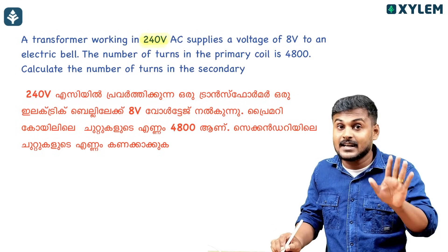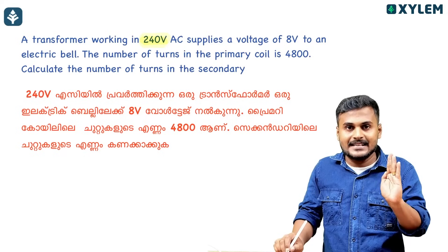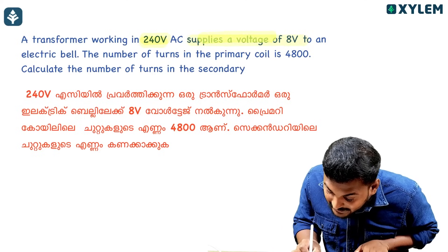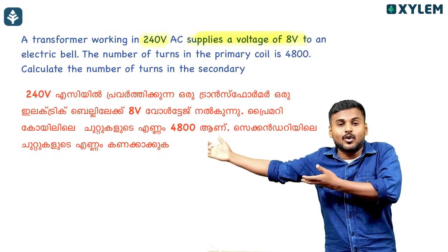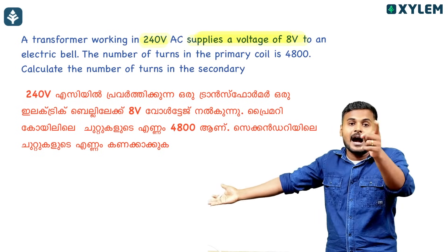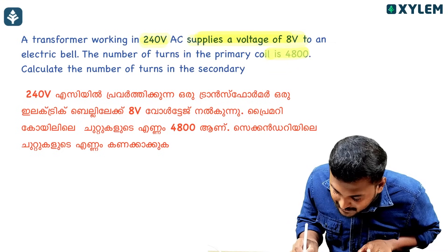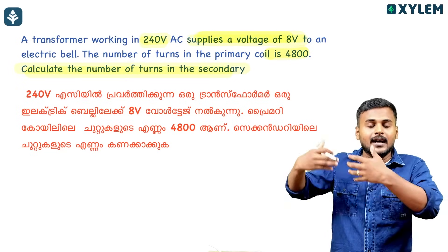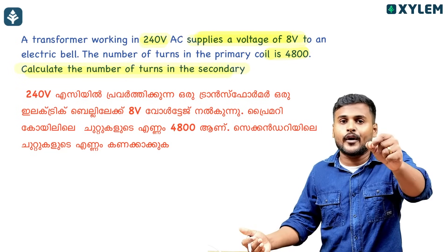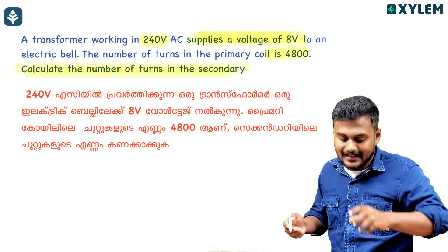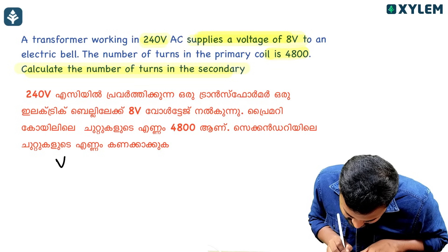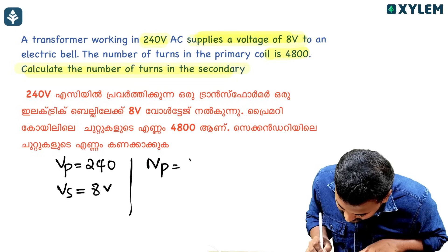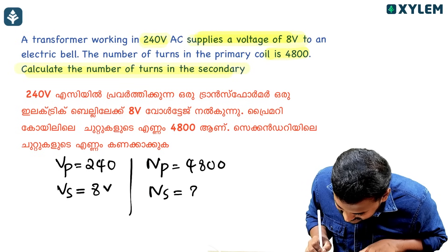Next problem: A transformer supplies a voltage of 38 volts. The input voltage Vp equals 260V, Vs equals 38V, and the number of turns in the primary Np equals 410. Calculate the number of turns in the secondary.